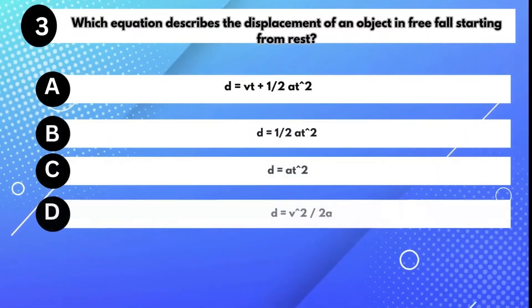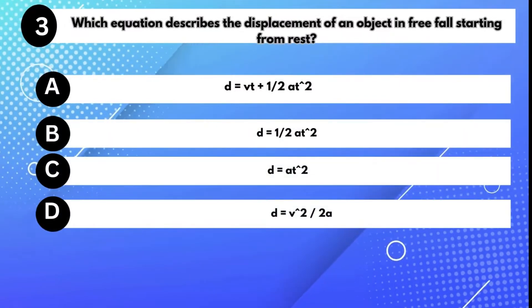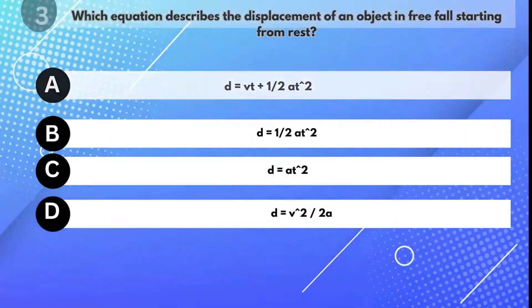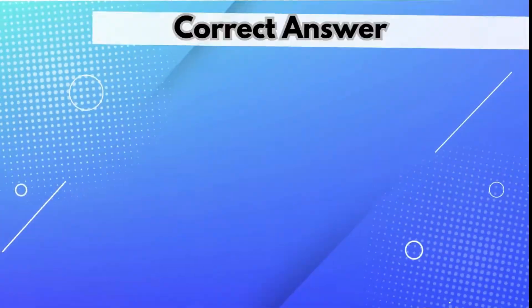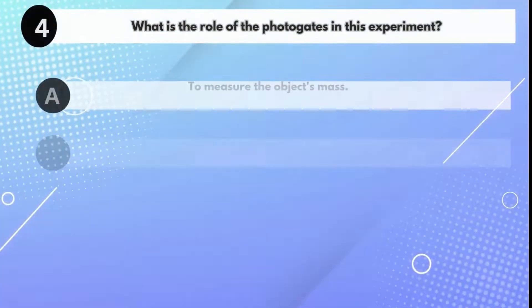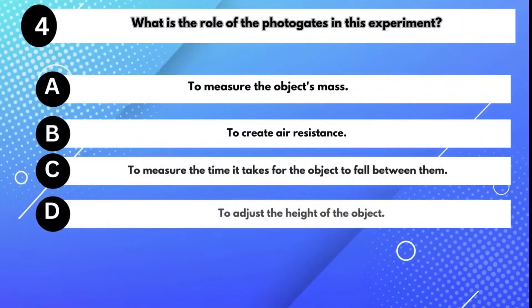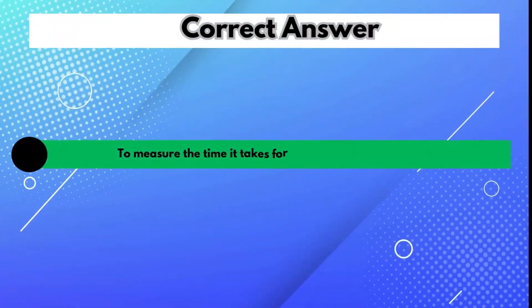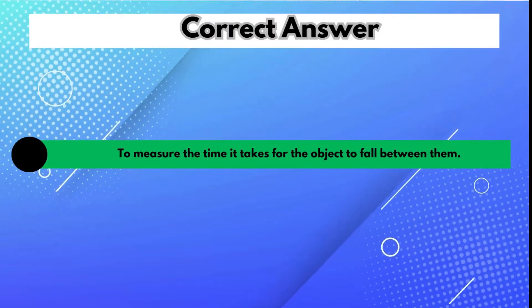Which equation describes the displacement of an object in free fall starting from rest? Answer B: D equals one-half a times t squared. What is the role of the photogates in this experiment? Answer C: To measure the time it takes for the object to fall between them.